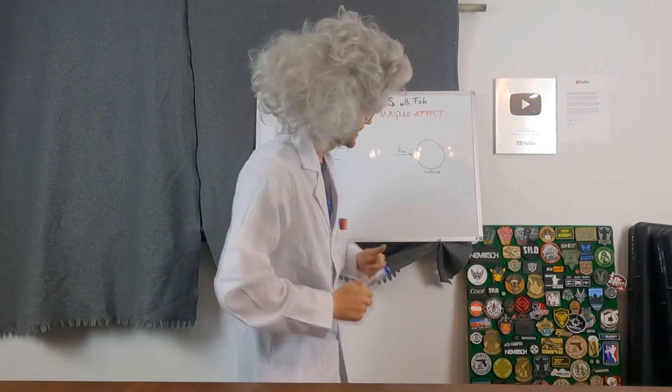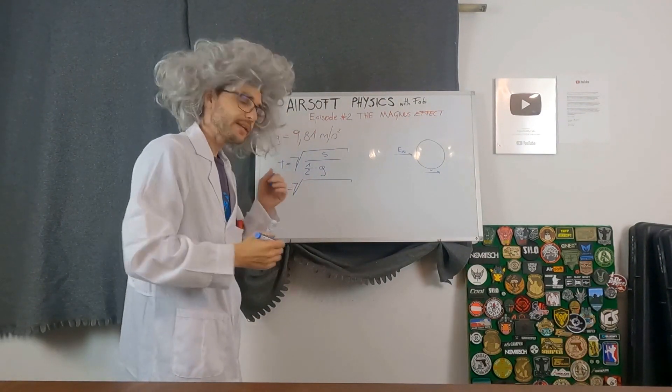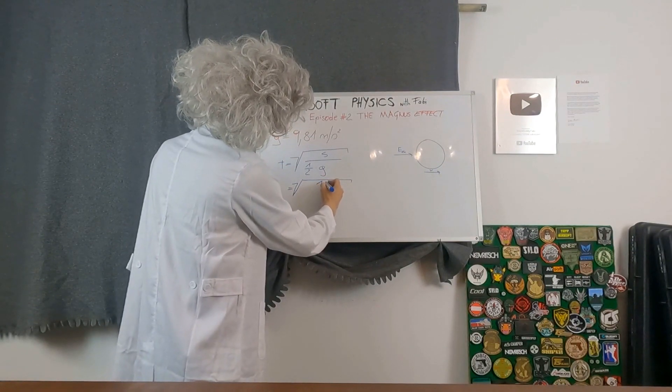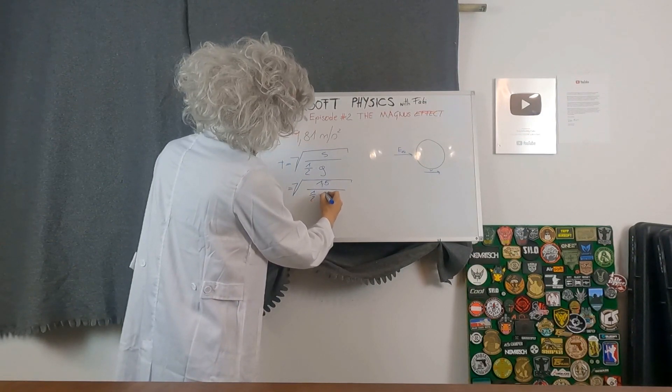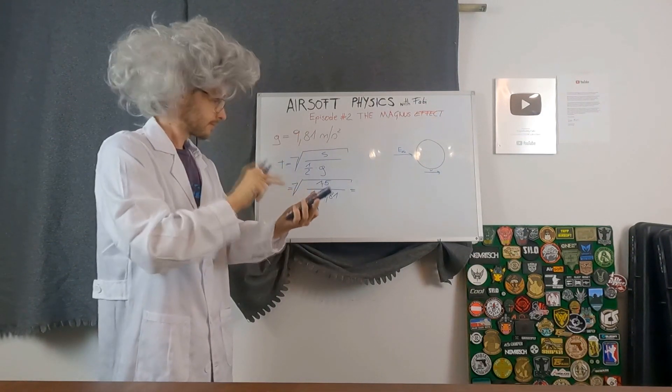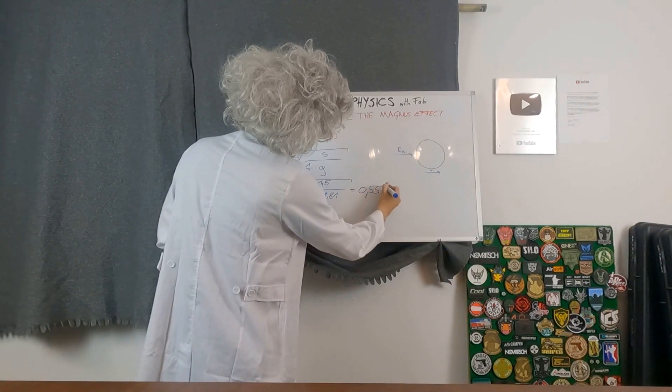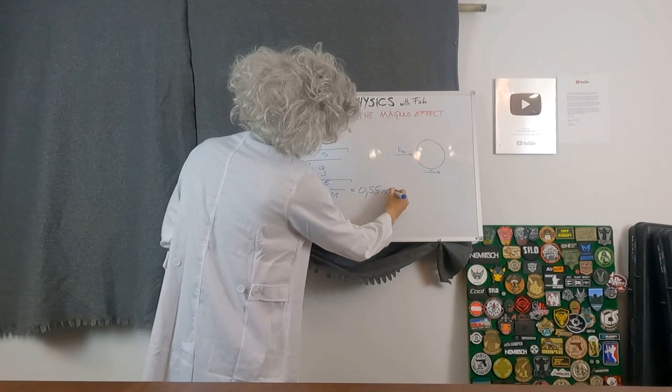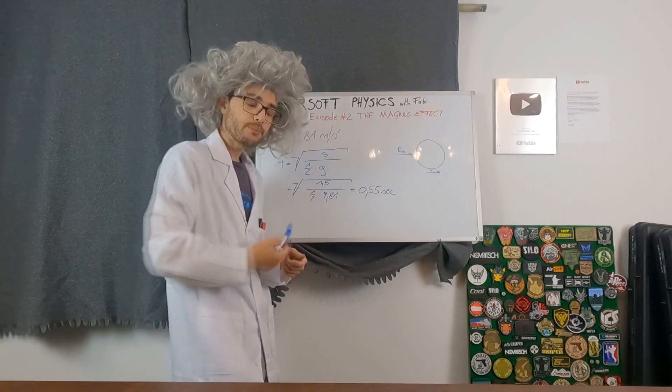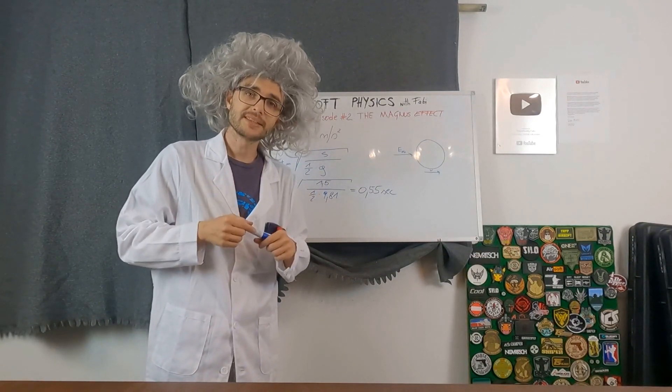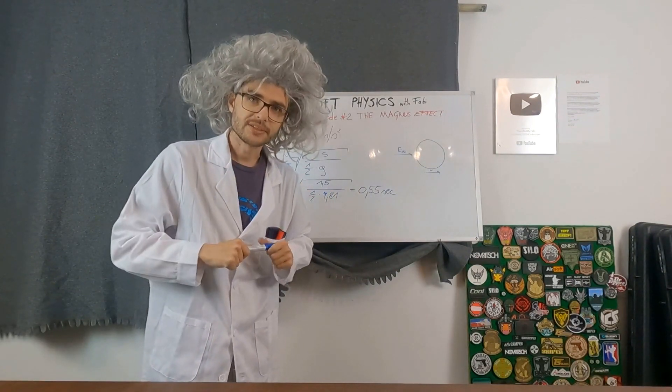So let's calculate that. We said we're shooting from a height of 1.5 meters divided by half g, 0.55 seconds. If you shoot a BB out of your gun at a height of 1.5 meters, it will hit the ground after 0.55 seconds. And that's not a lot. So what is gravity doing? Gravity is pulling our BB down.